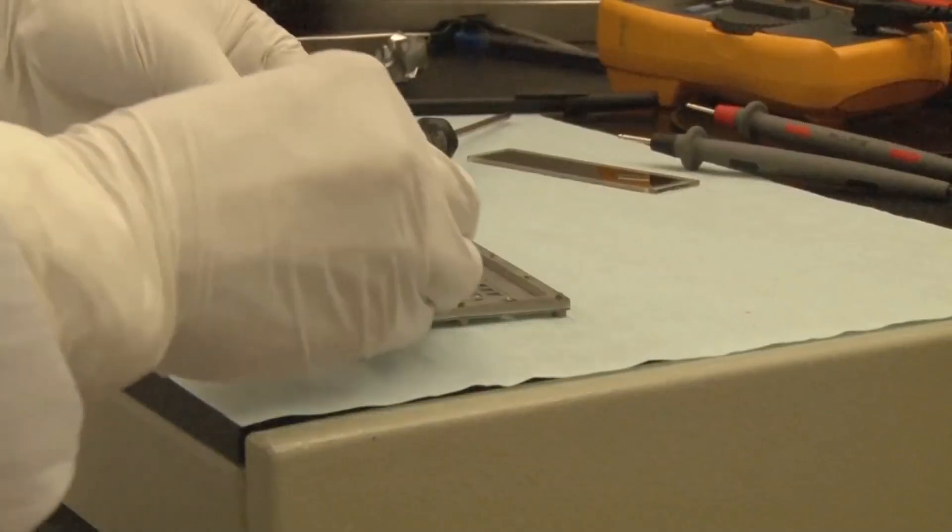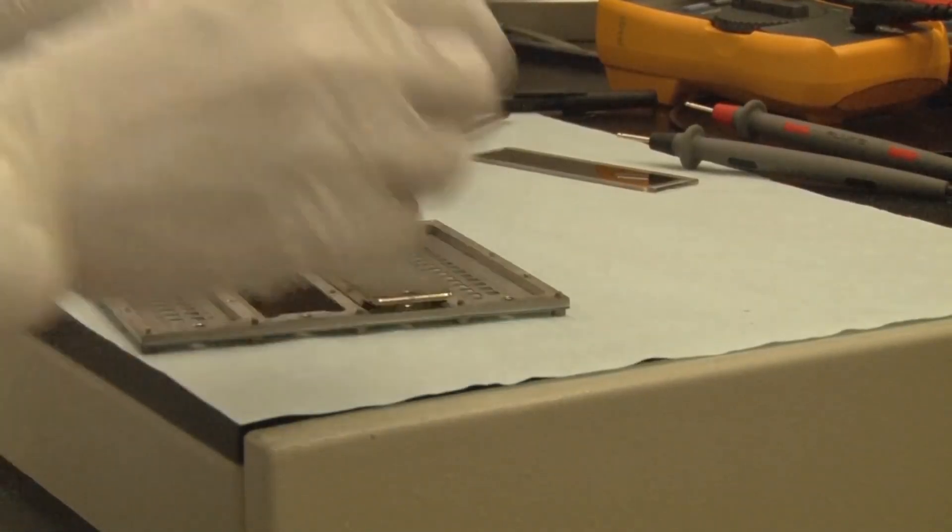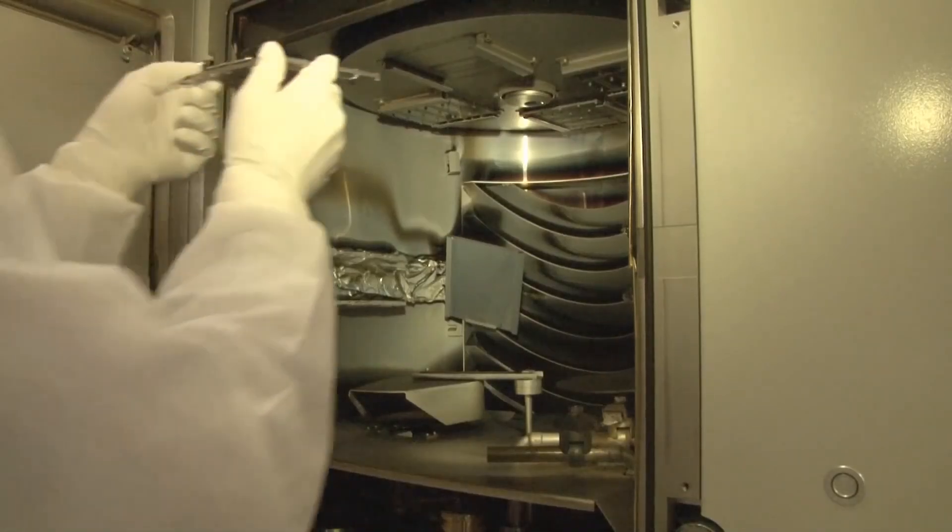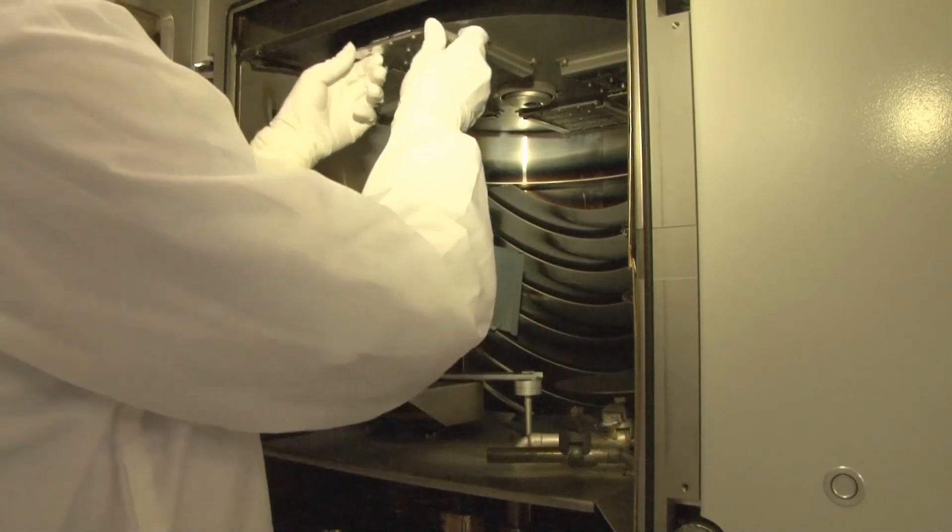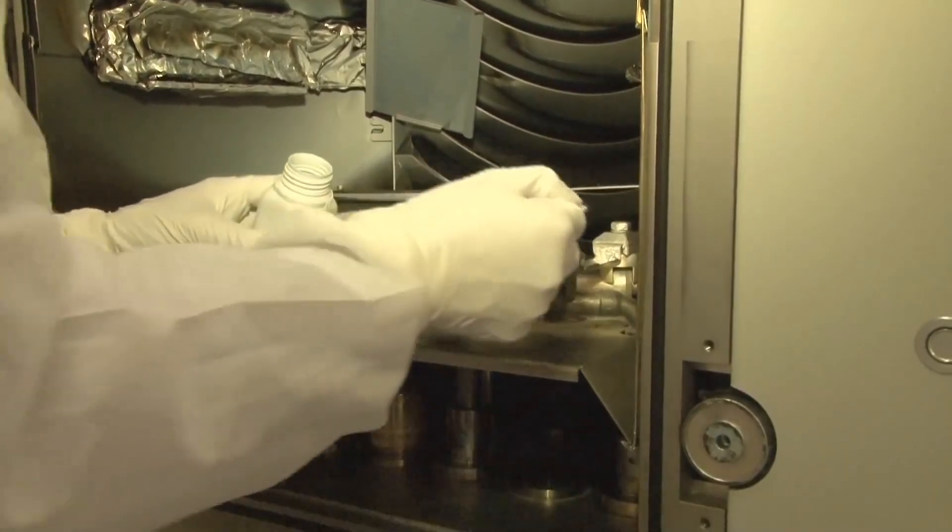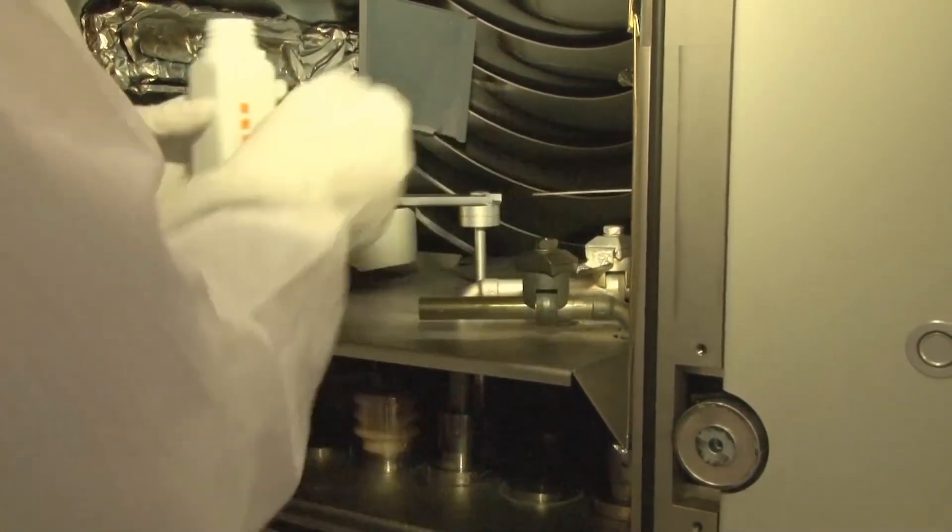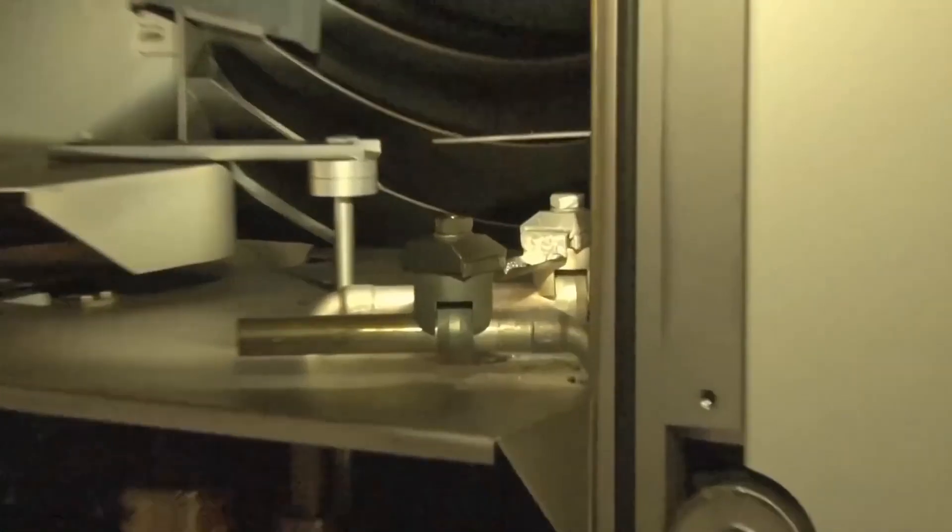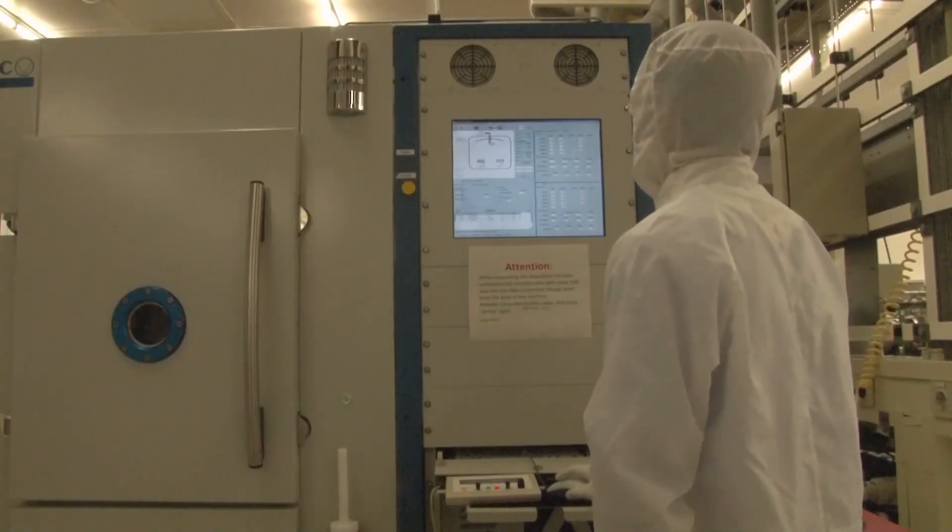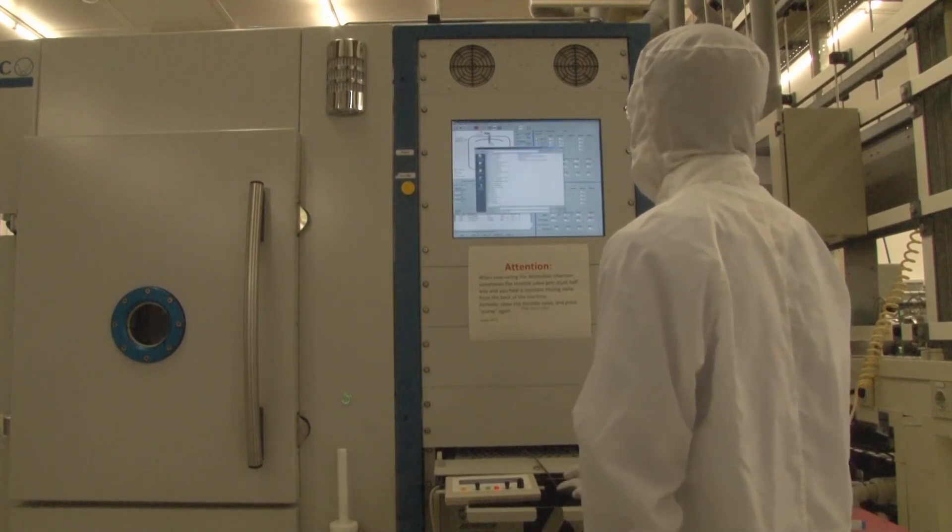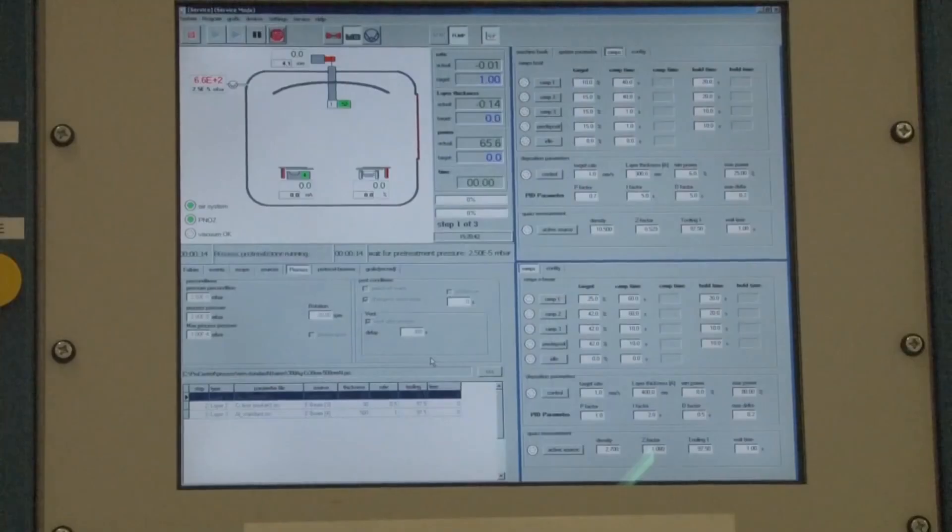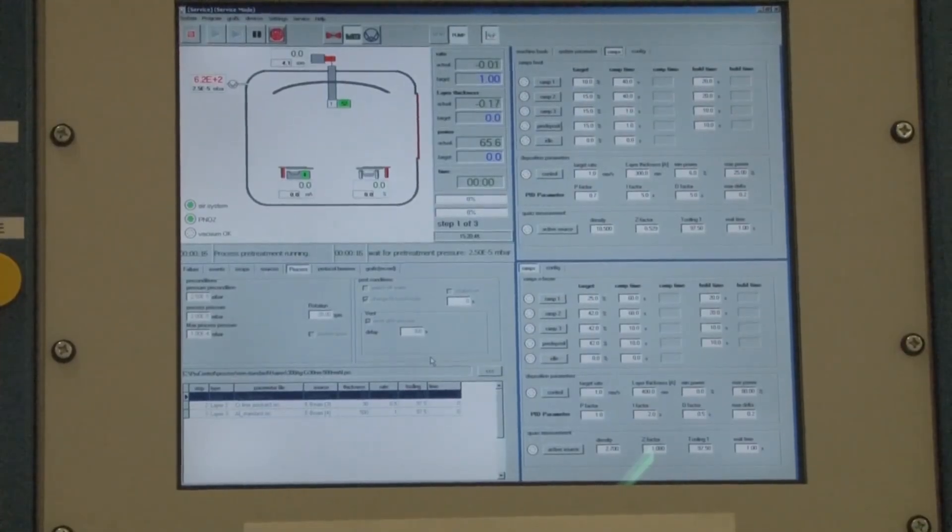Next, the samples are covered by a mask. The mask determines the areas on the sample where the metal contacts are deposited. The samples are mounted into a processing chamber. Silver is used as source material and particles of silver are put in a boat. The silver is evaporated using an electron beam. The silver vapor deposits on the samples and form the back metal contacts.